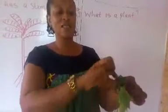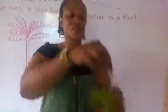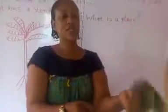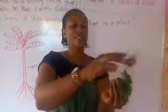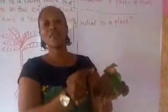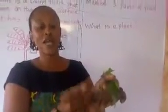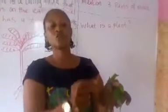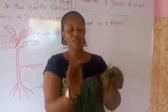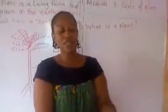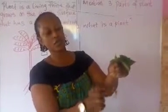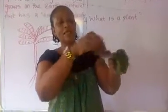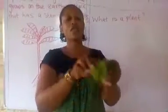These are the leaves. You can see how greenish they are. That is because the roots are supplying enough water, enough nutrients. These are the parts — roots, the stem and the leaves.